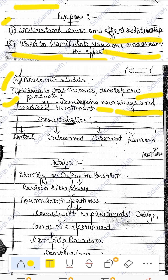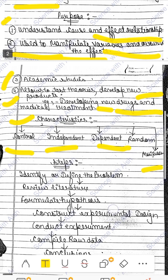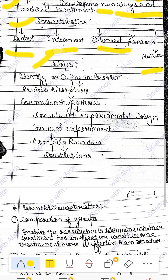The characteristics of the experimental method include: control, independent variable, random assignment, and manipulation. Now let's go to the steps of the experimental method — this is an important exam question. The steps you follow when conducting experimental research are critical to understand.